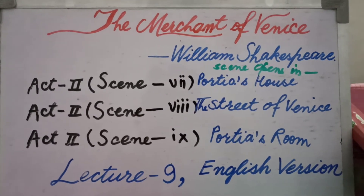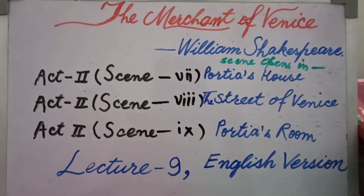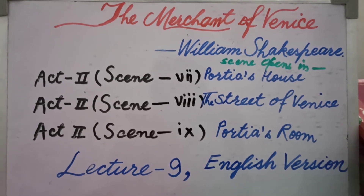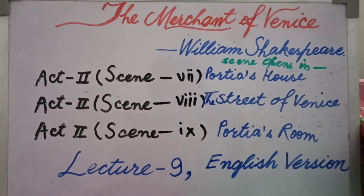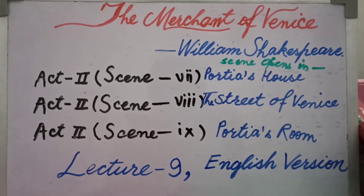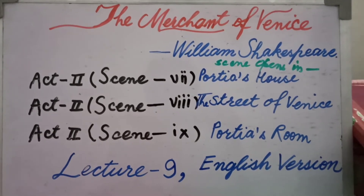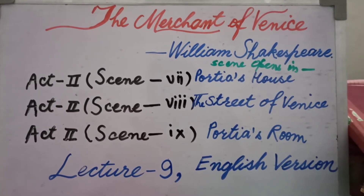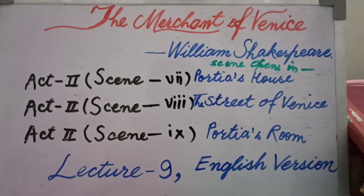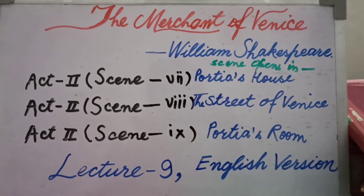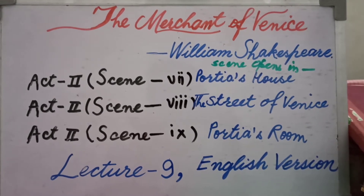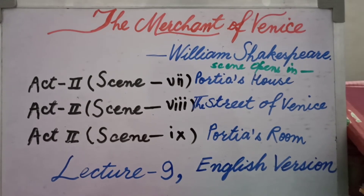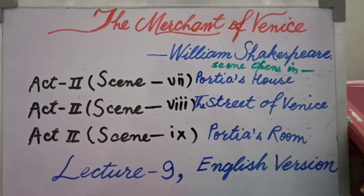According to his deserving quality, he will get whatever he deserves — it is written on the silver casket. The lead casket bears the inscription: 'Who chooses me must give and hazard all he hath.' This is very dangerous, indicating that the chooser will have to put everything at risk. Portia tells the Prince that one of the caskets contains her picture. She will marry the man who chooses the casket containing her picture.